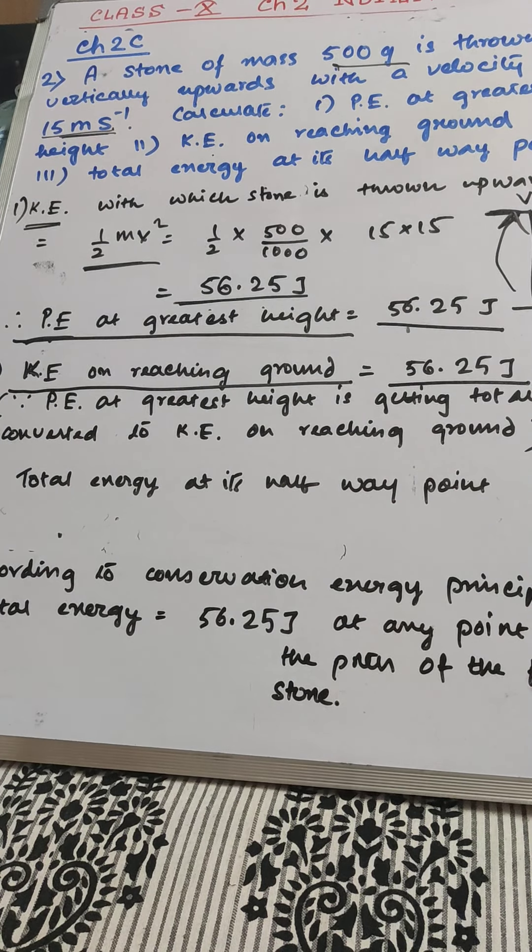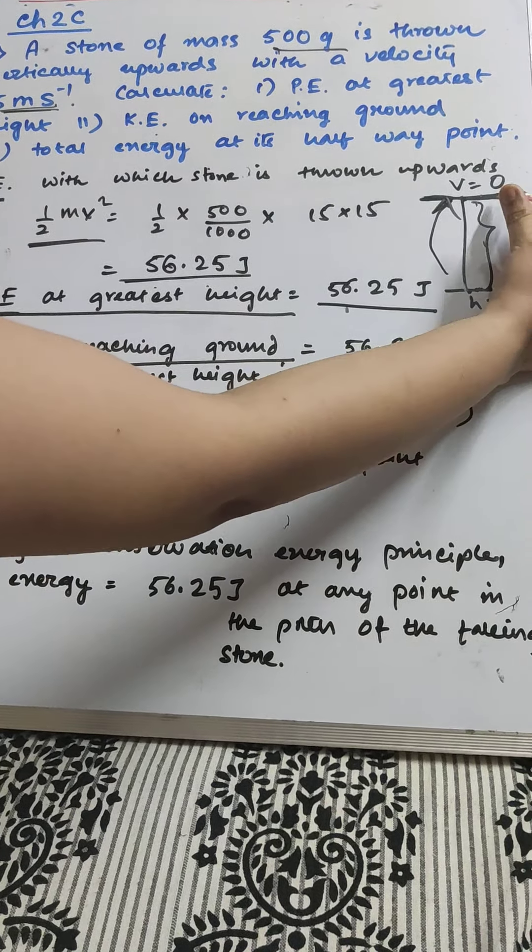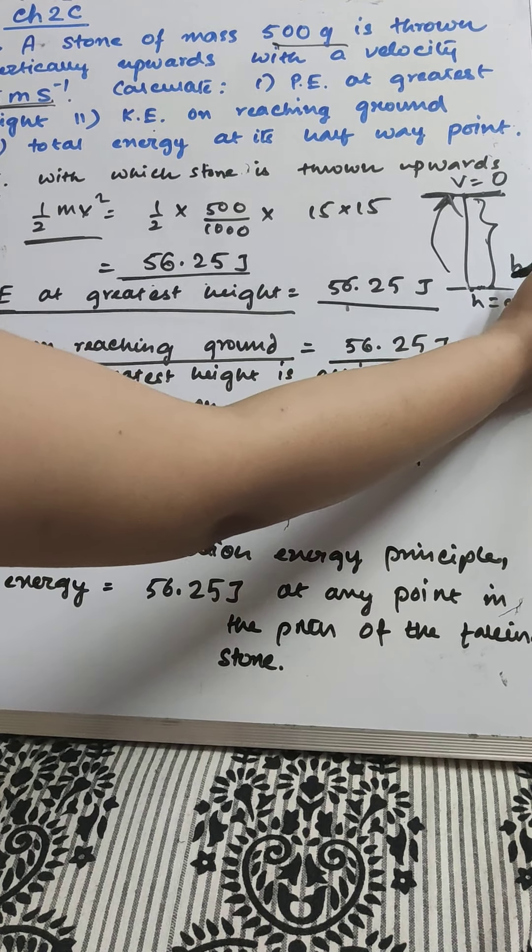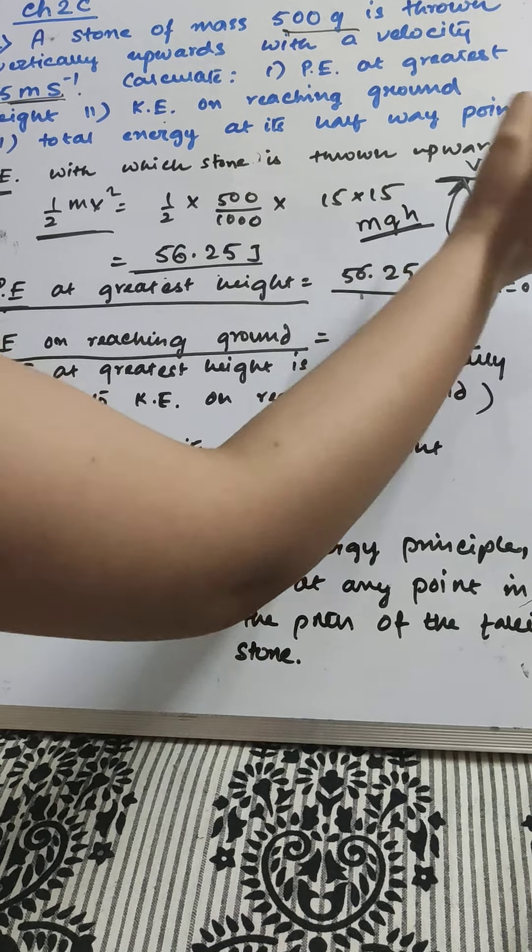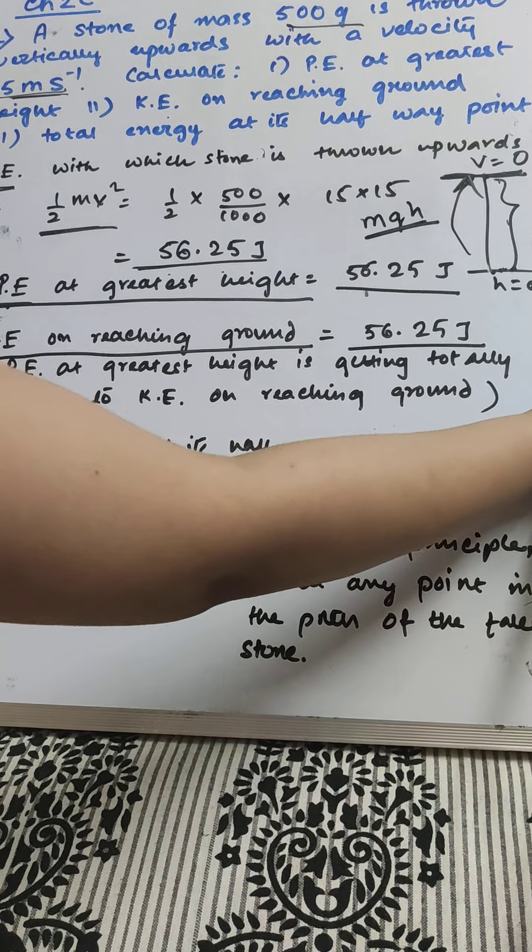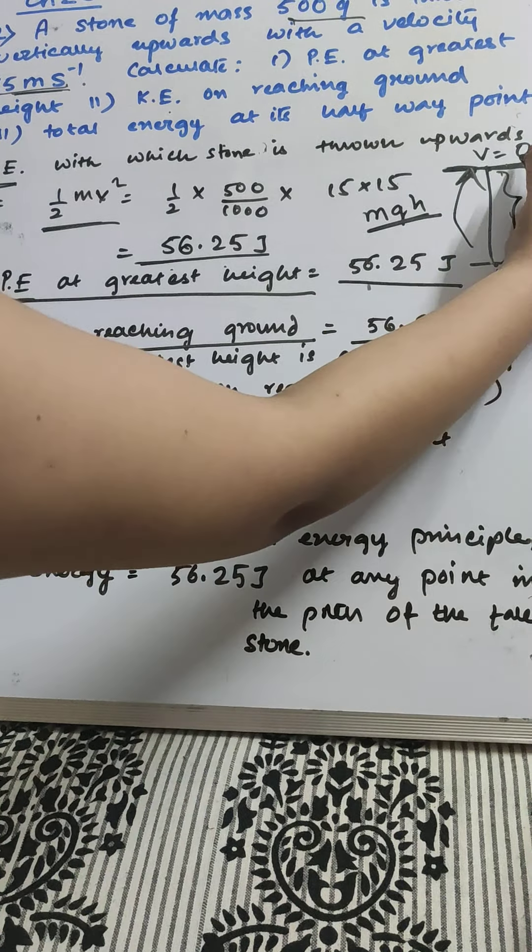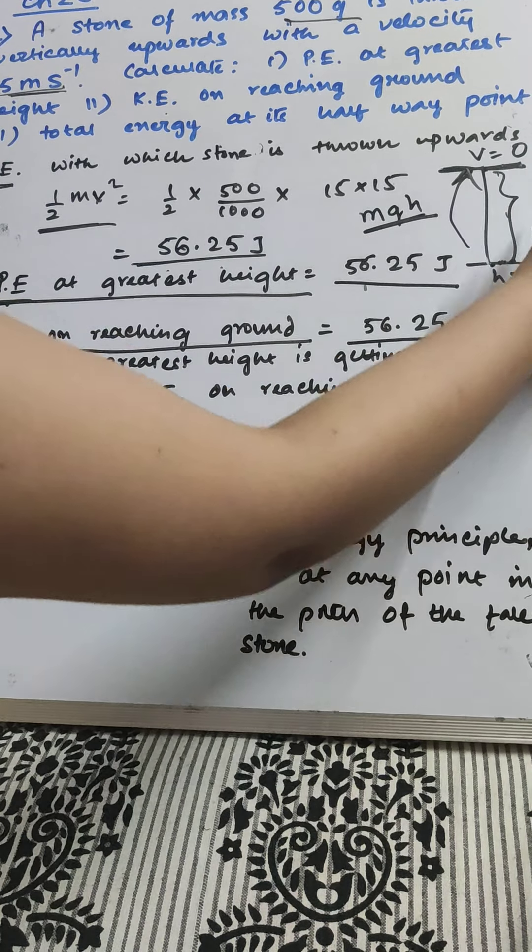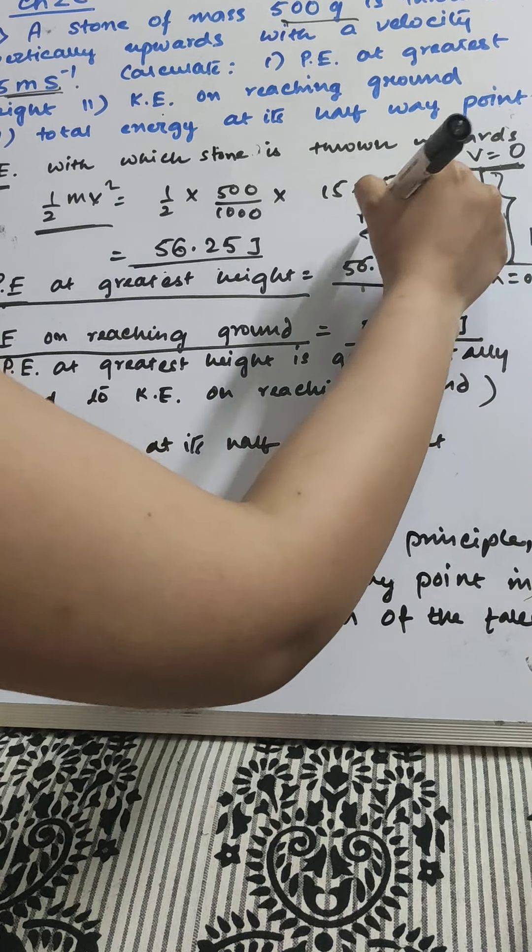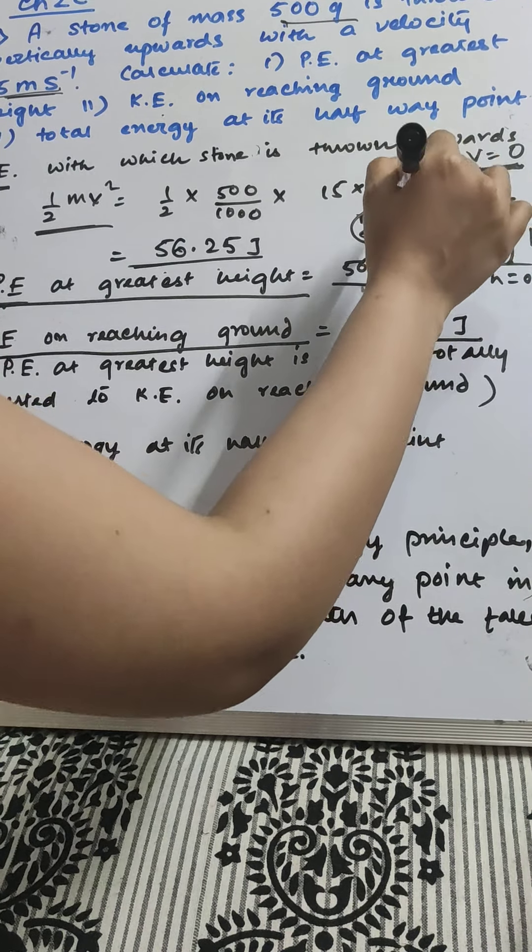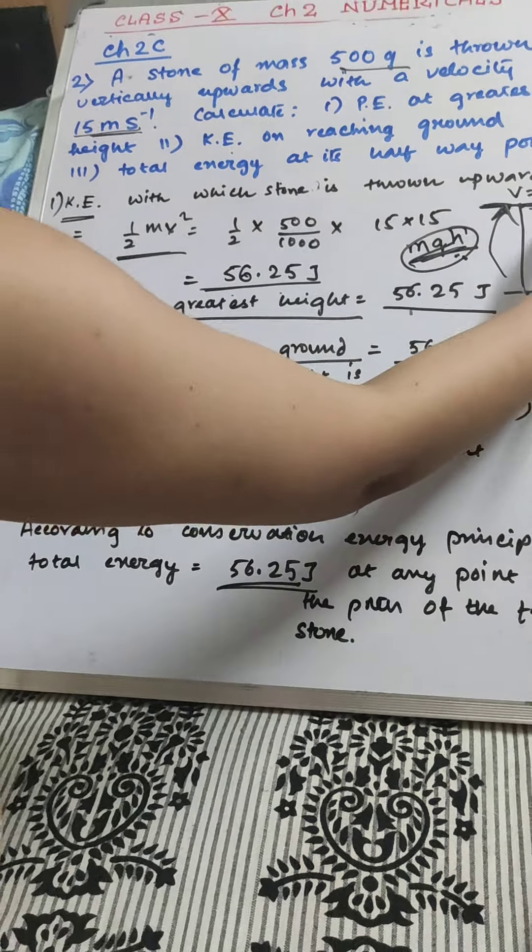The third part, total energy at its halfway point. At any instant of this path, the total energy will remain constant, MGH. What is MGH in this case? You can either use the kinetic energy or the potential energy simply. When the stone is falling down, what is the maximum energy, the total energy? MGH. You don't need to substitute any values. You can straight away put the value of the potential energy.